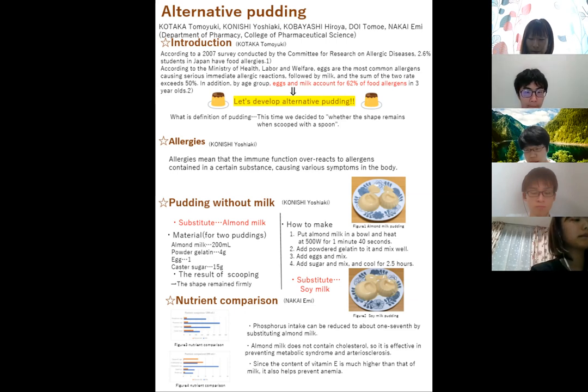Next is soy milk pudding. The ingredients and method are almost the same, except that the 200ml of the almond milk pudding is changed to 200ml of soy milk. Figure 2 shows soy milk pudding. When I scooped it with a spoon, the shape remained firmly. The color is slightly different from almond milk pudding. I felt that it was the same taste as the standard pudding.